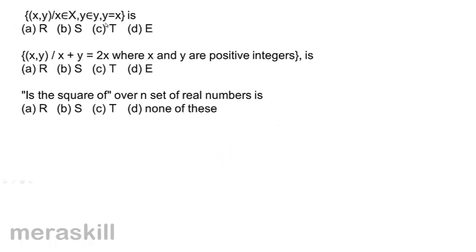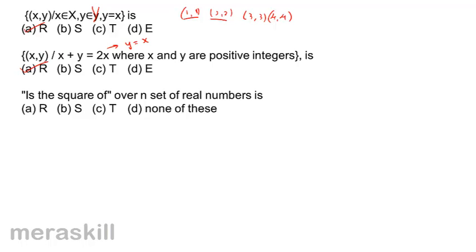Now consider the relation y = x, where we have pairs (1,1), (2,2), (3,3), (4,4). Every number is the pre-image of itself. This is reflexivity, where the image and pre-image are one and the same. Another expression that simplifies to y = x is also reflexivity.